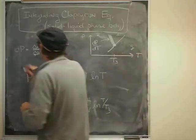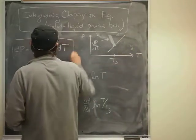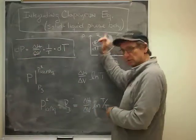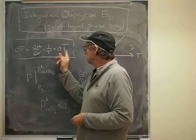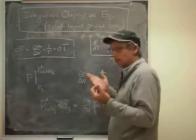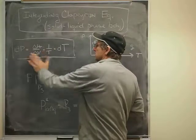Now, the Clapeyron equation itself looks like this. If I march along in the temperature direction, a small amount, dt, then the pressure will go up by a certain amount. And how much will it go up? Well, it's going to go up by this factor.